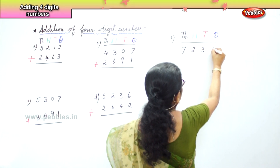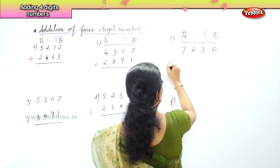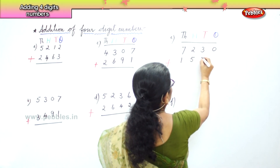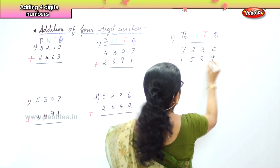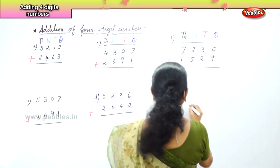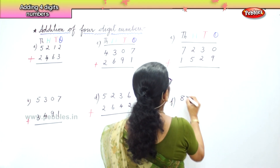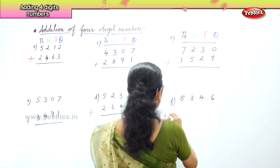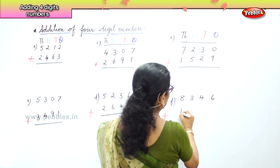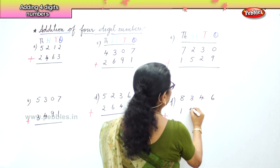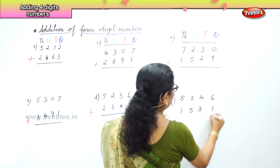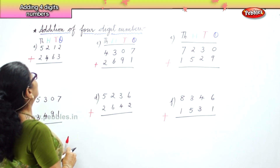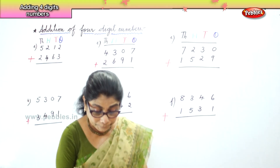Then, seven thousand two hundred and thirty plus one thousand five hundred and twenty-nine. Then, eight thousand three hundred and forty-six plus one thousand five hundred and thirty-one. We are doing four addition problems of four digit numbers.